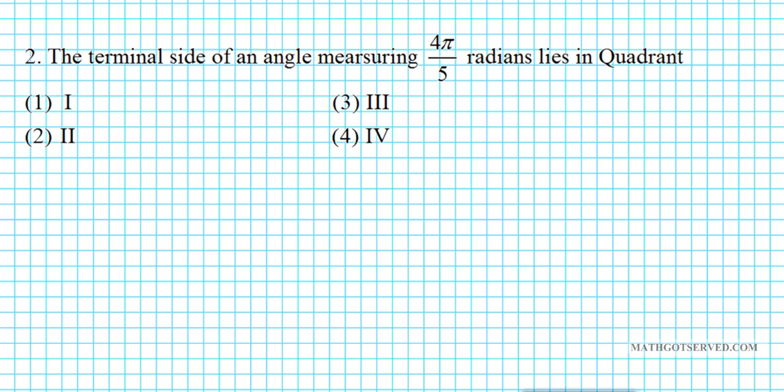For question 2, it says the terminal side of an angle measuring 4 pi over 5 radians lie in quadrant. The difficulty that some students might have is that this angle is expressed in radian form. If we can convert this radian measure, 4 pi over 5 radians into degrees, then it's easy to determine what quadrant this angle of value lies in.